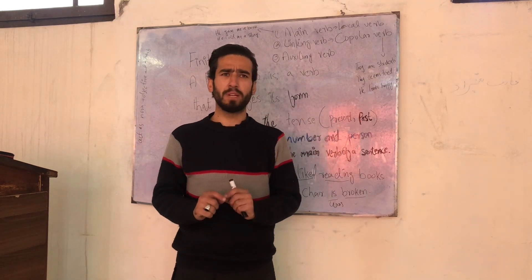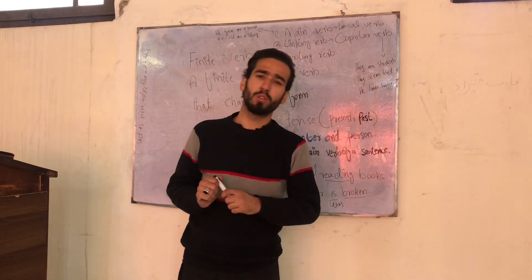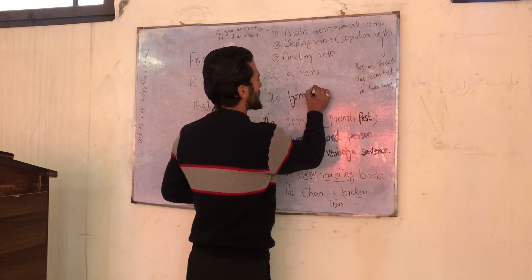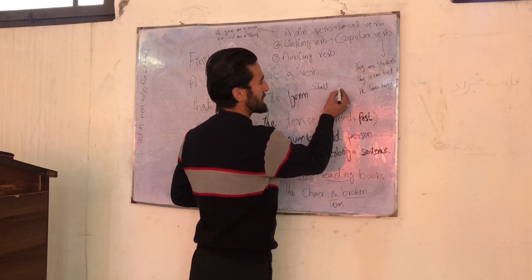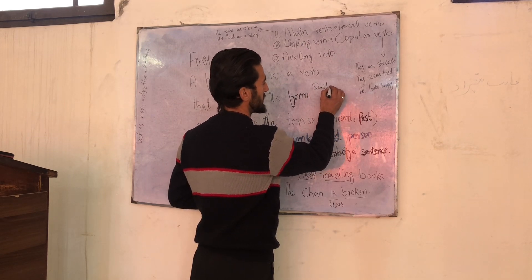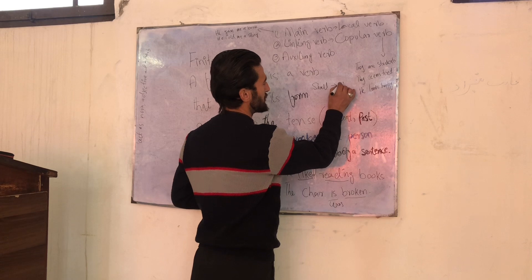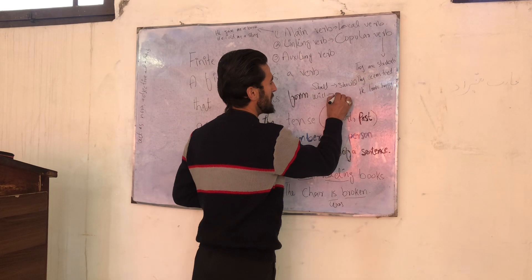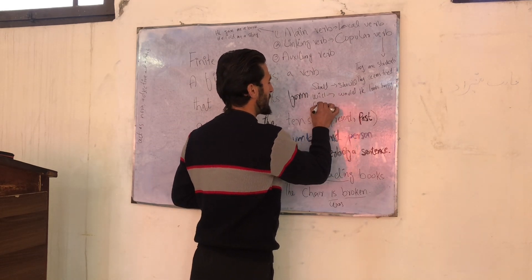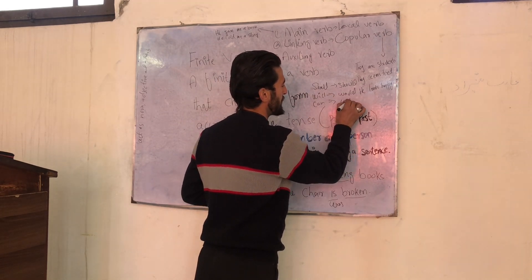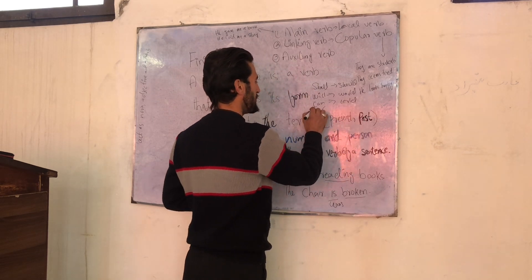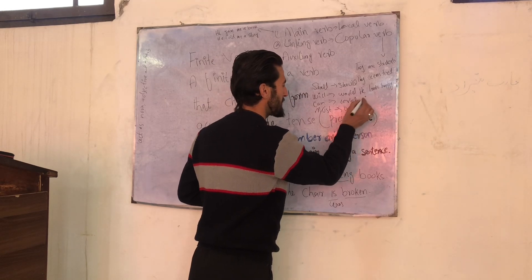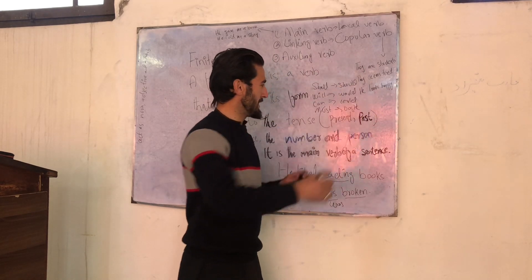The other section of the verb is the modal verb. The modal verb includes: should, will, would, and others. Modal verbs express probability and similar meanings. They are also a type of auxiliary verb.